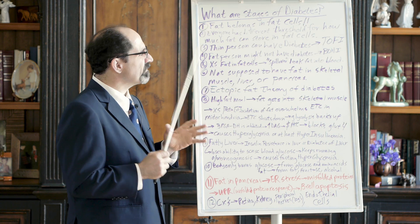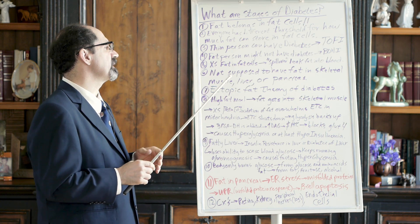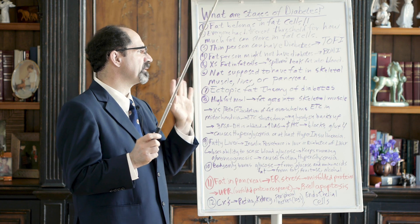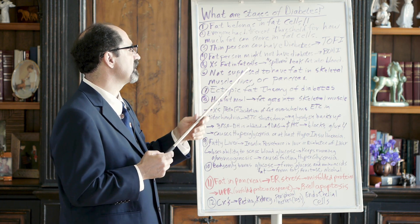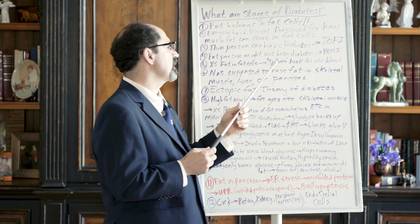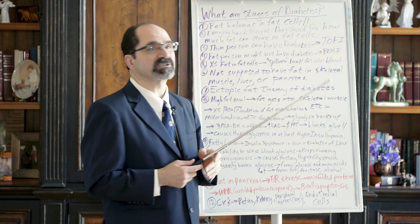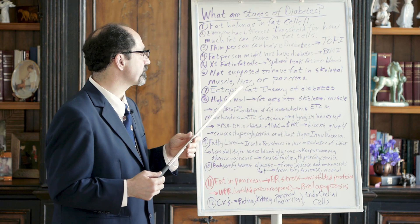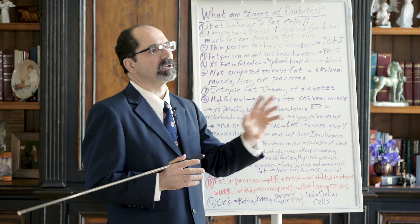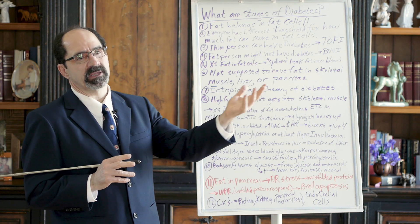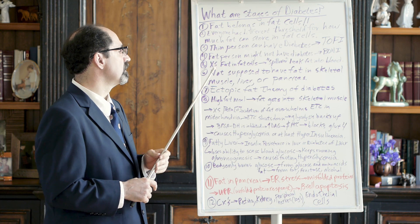We have a relatively fixed number of fat cells in our body. When you excessively stretch a fat cell, it will sometimes begin to leak fat into the blood - sometimes called a spillover effect. That fat can then go to other tissues, especially skeletal muscle or the liver.